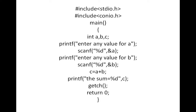Every program has to start with curly braces. Then: int a, b, c semicolon. Int is a data type, and a, b, c are three variables. Every statement in C language is terminated by a semicolon.